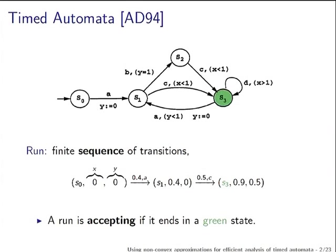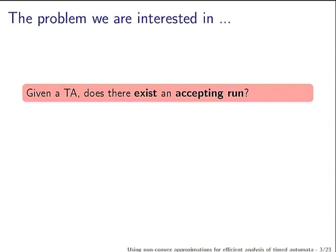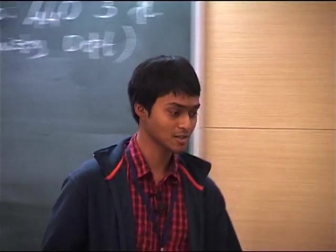The value of X stays the same, but the value of Y becomes 0 because it was reset. A run is said to be accepting if it ends in a green state — you can call it a final state or accepting state. Given an automaton, does there exist an accepting run? This is a very natural question.